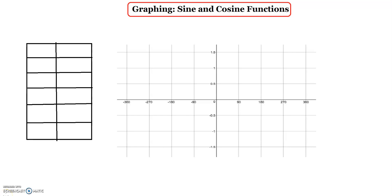Graphing sine and cosine functions. To graph sine and cosine functions, I will be using a Cartesian plane that has angles for the values of x, which I will write in a table. I will be plotting f of x equals sine x for the sine graph, and f of x equals cosine x for the cosine graph.